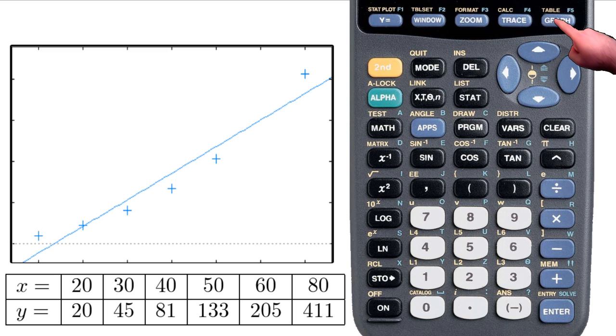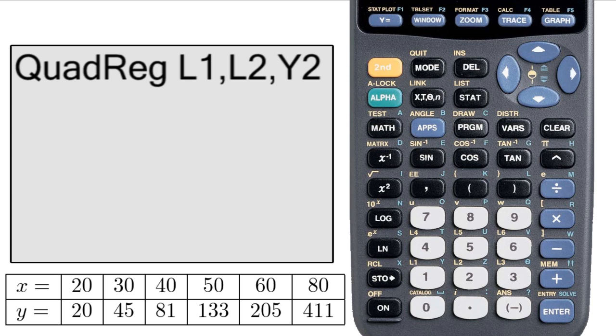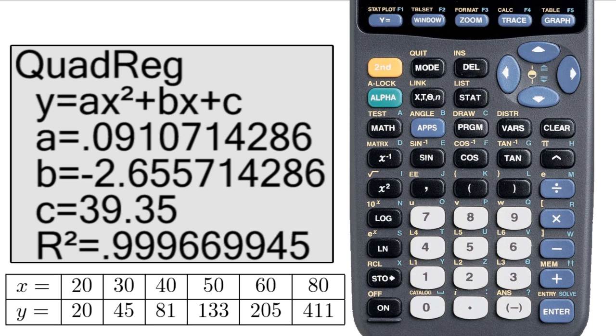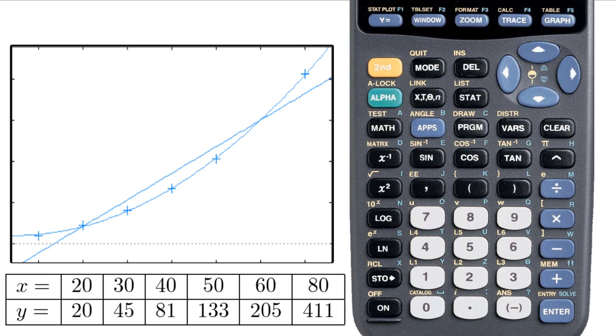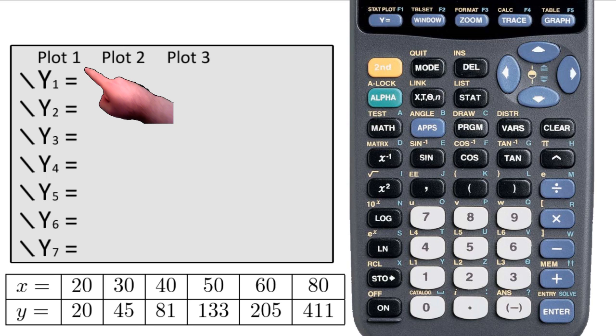Any other kind of regression that you'll use in an algebra class will work exactly the same way. Like, I'm going to do the same thing with quadratic regression, this time storing as Y2. I take a look at the results, and I see it's actually a lot closer than the line is. When I'm done with this, I can turn off the plot by deselecting it from the Y-equal screen.